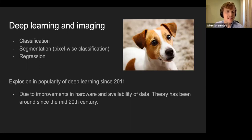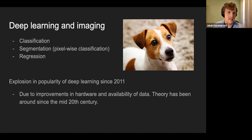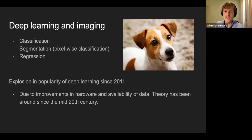Another problem is segmentation, which involves classifying every single pixel — for example, filling in the space occupied by the dog or the dog's nose. A third class is regression, where you map features to a continuous variable — for example, how much does the dog weigh or how old is the dog? These are all continuous things.